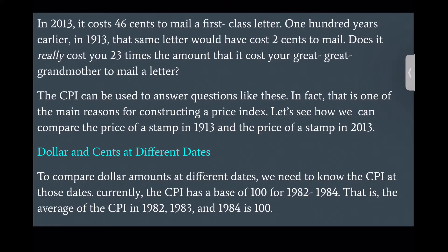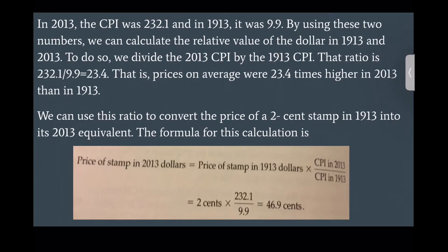Dollar and cents at different dates. To compare dollar amounts at different dates we need to know the CPI at those dates. The CPI has a base of 100 for 1982–84. In 2013 the CPI was 232.1 and in 1913 it was 9.9. By using these two numbers we can calculate the relative value of the dollar. We divide the 2013 CPI by the 1913 CPI: 232.1 over 9.9 equals 23.4. That is, prices on average were 23.4 times higher in 2013 than in 1913.